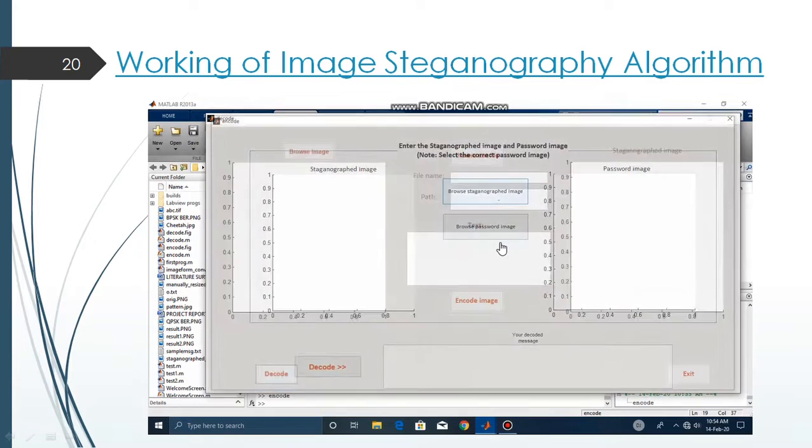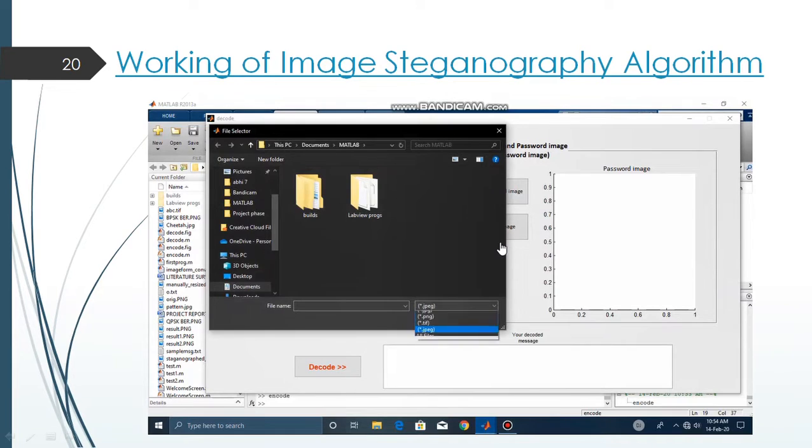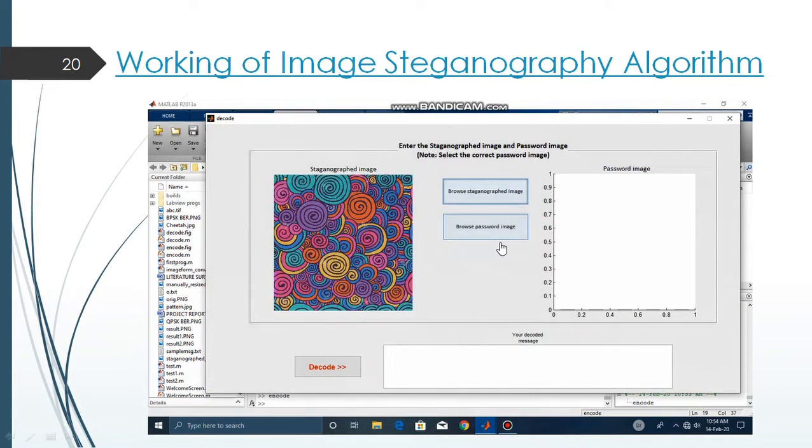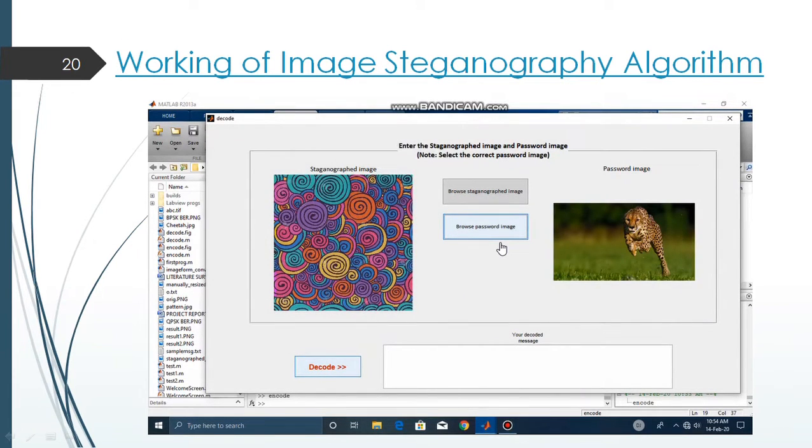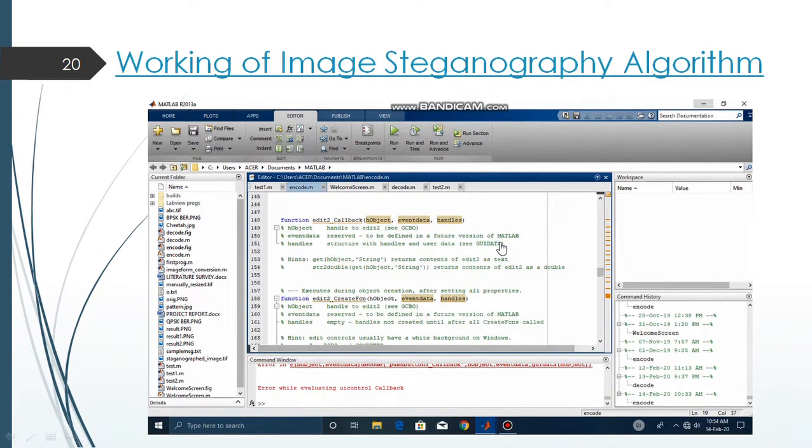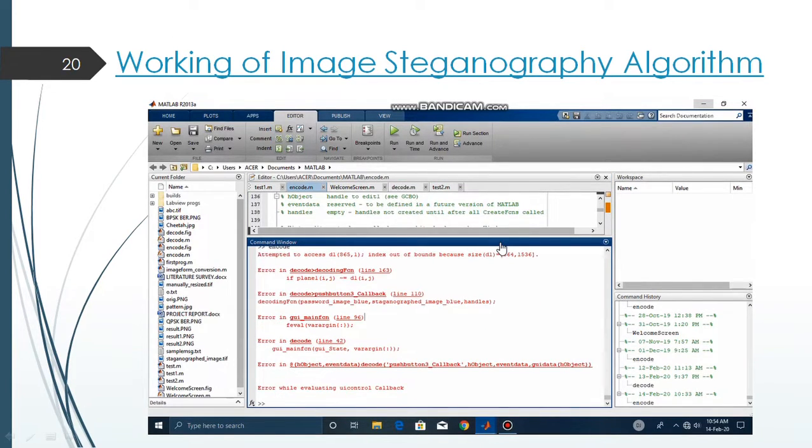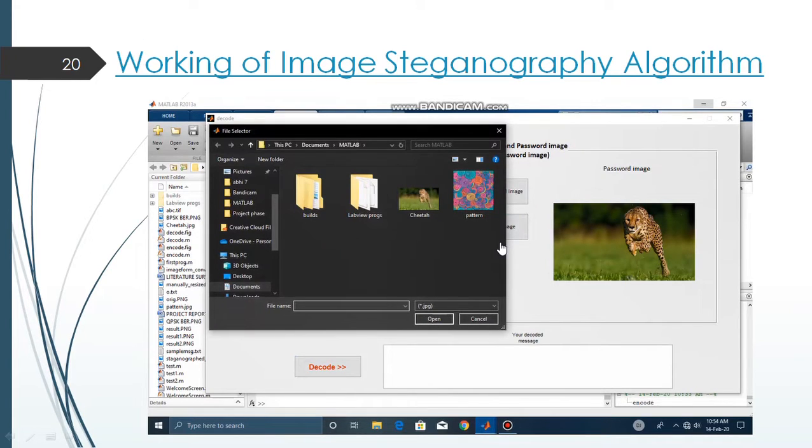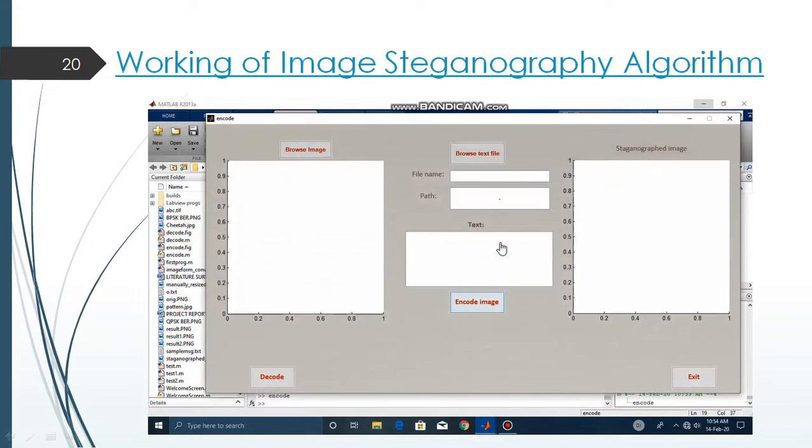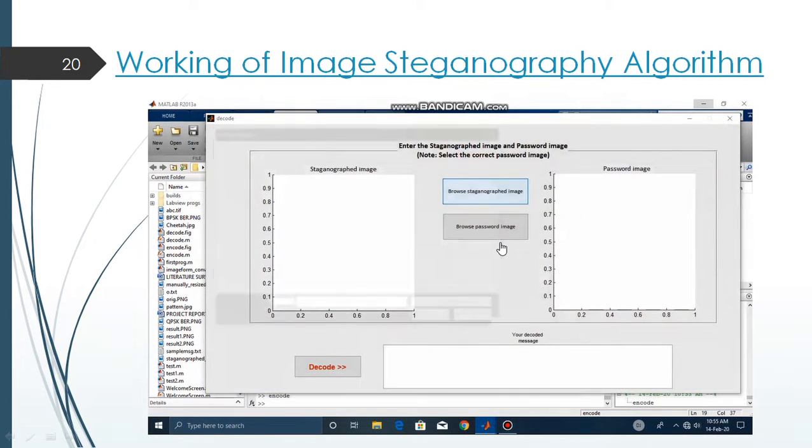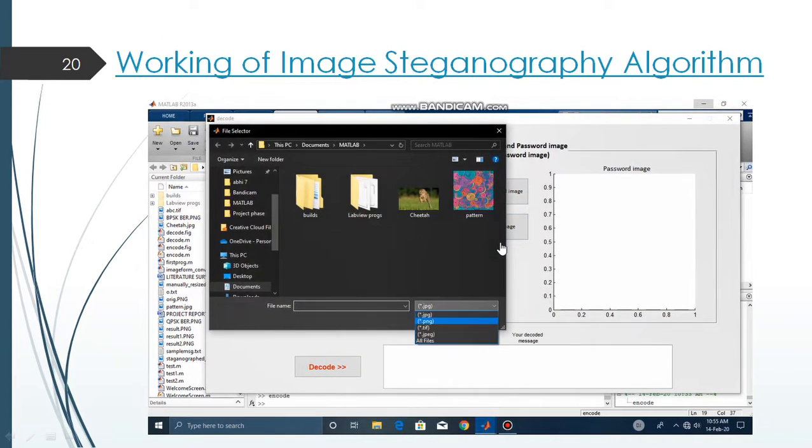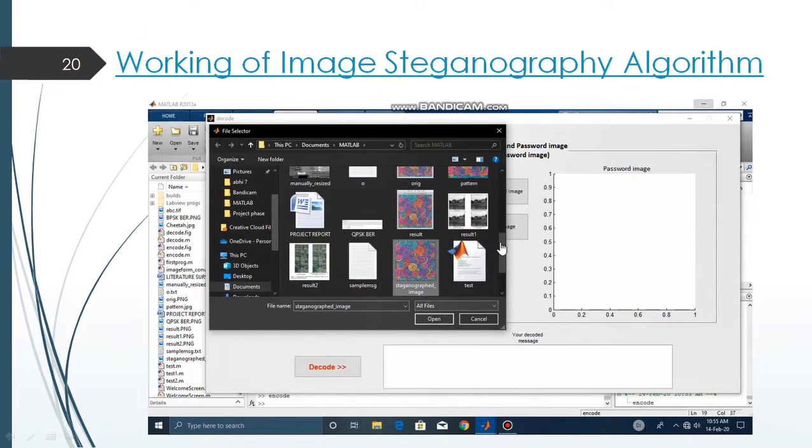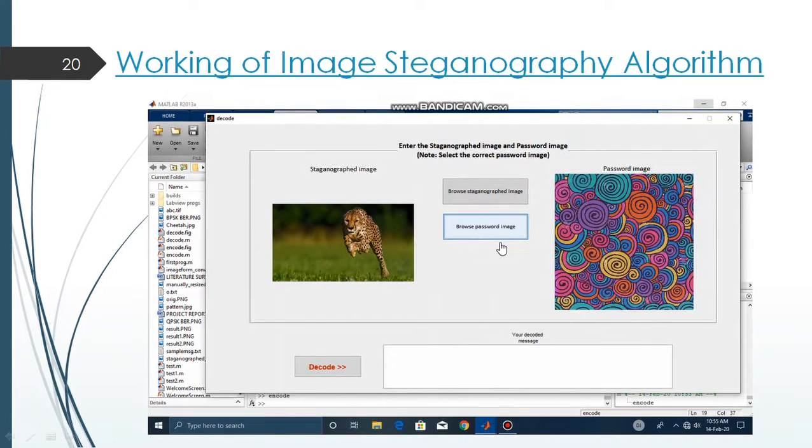Now let's select an image that is not the correct password image. So first we select the steganographed image. And then we select a wrong password image. And let's see will it decode or not. So we can see that the message is not decrypted correctly. It shows many errors and it has not shown any message. So let's select a different image this time. We have selected a different image and we have selected the correct password image. This time also since the left hand side image is different, the decoding algorithm will not work. So this proves that our application is running correctly.